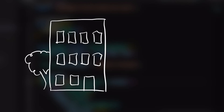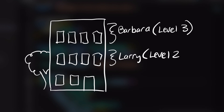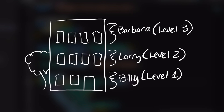Let's say we have three people who interact with the company: Barbara, who is the president of the company, she's on floor three; Larry, who handles marketing for the company, is on floor two; and Billy, who is a cashier where the storefront is, he's on floor one.